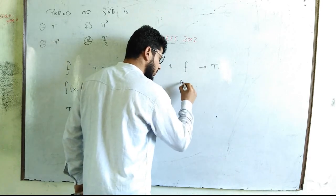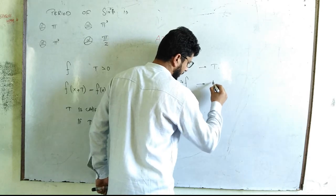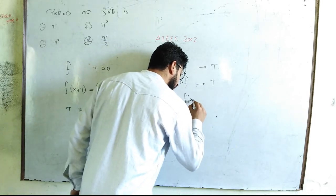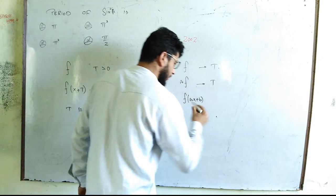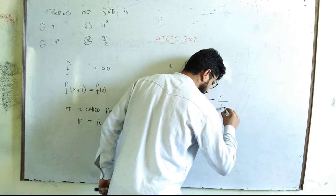if I do this, a times f, its period will remain t. If I do this, f times ax plus b, then its period will remain t upon mod of a.